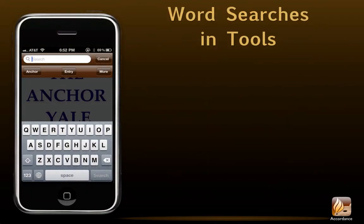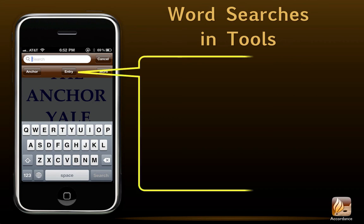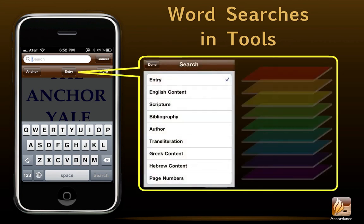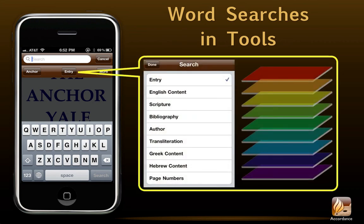Searching for a word in a tool is much the same. We've already mentioned the single exception — tools have many more layers. The default entry or title is probably the most common search setting, but users may choose to search any layer. Simply tap the entry icon and select from the layers that are within each tool.